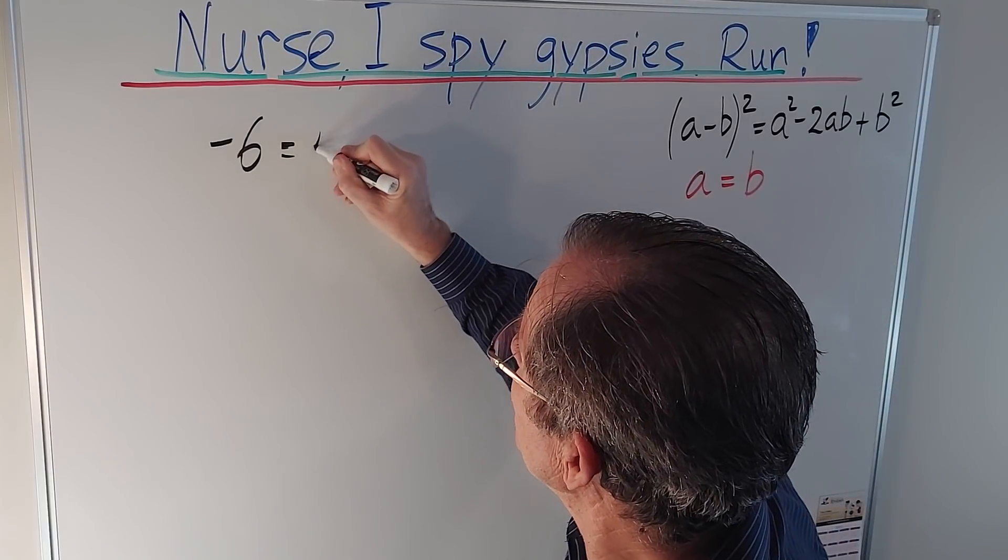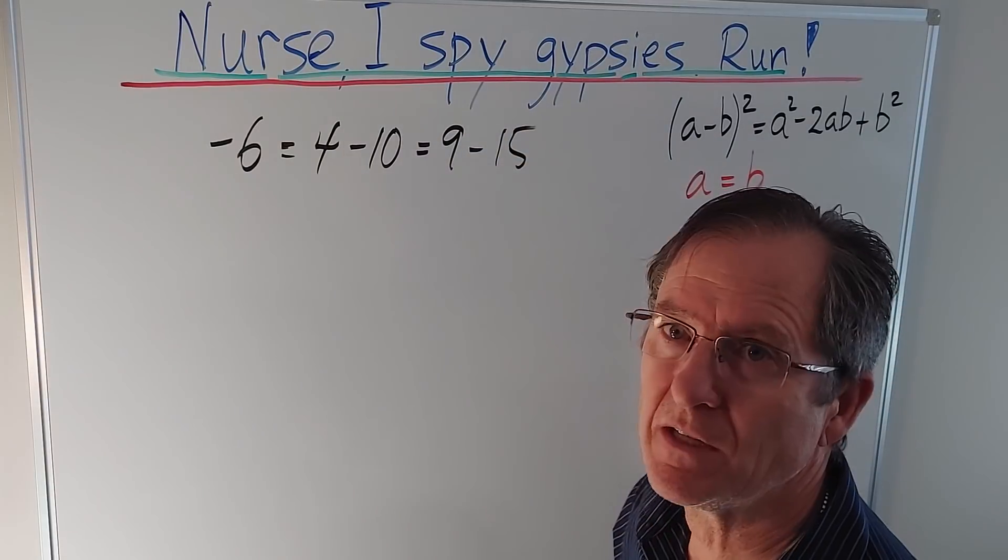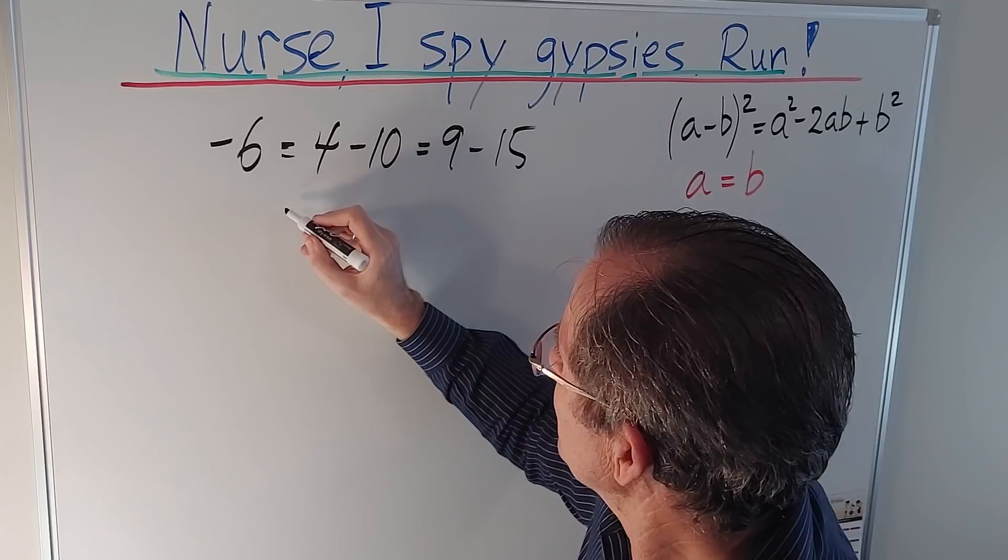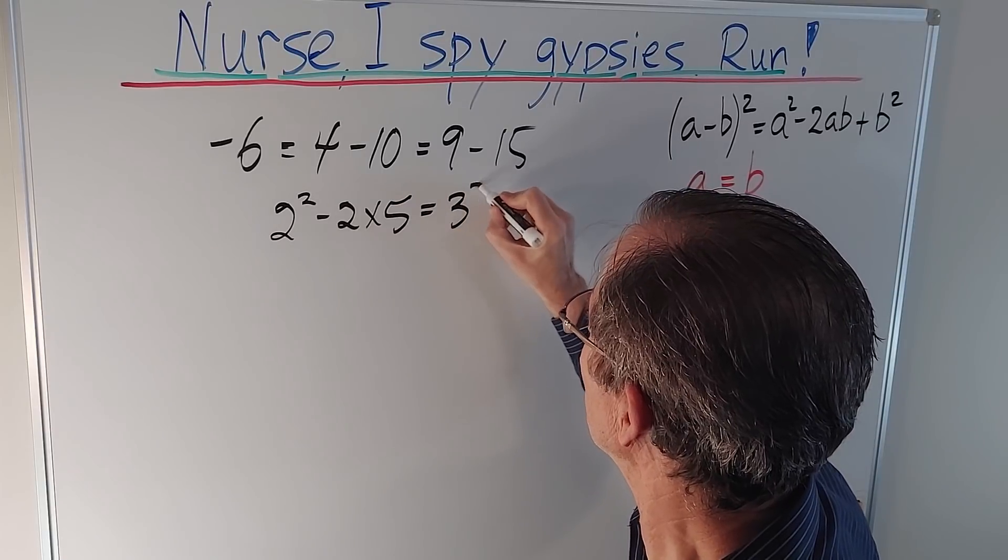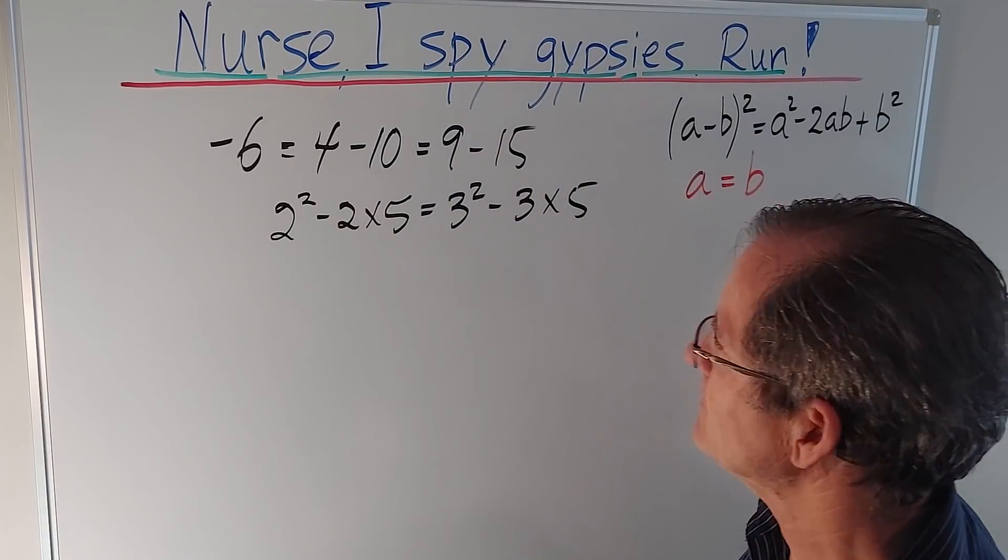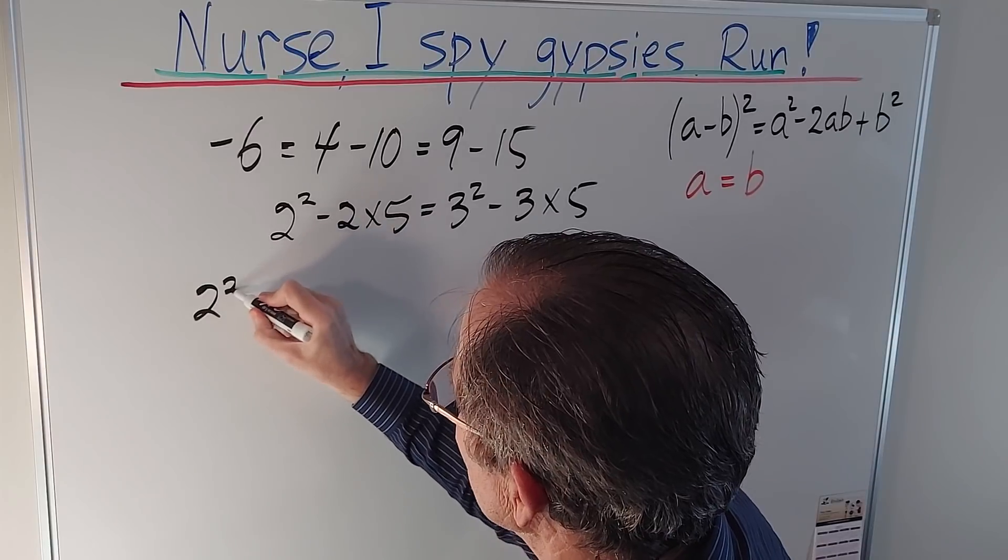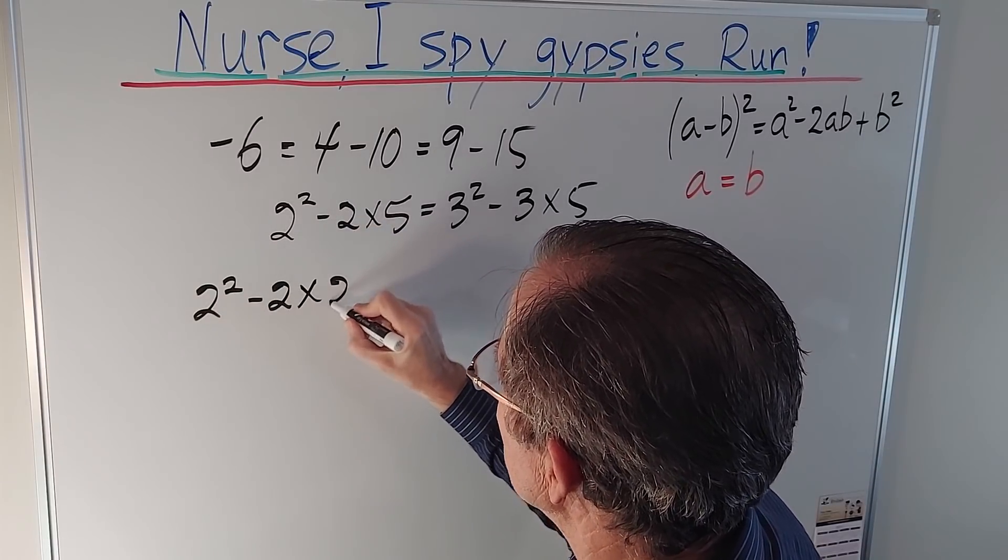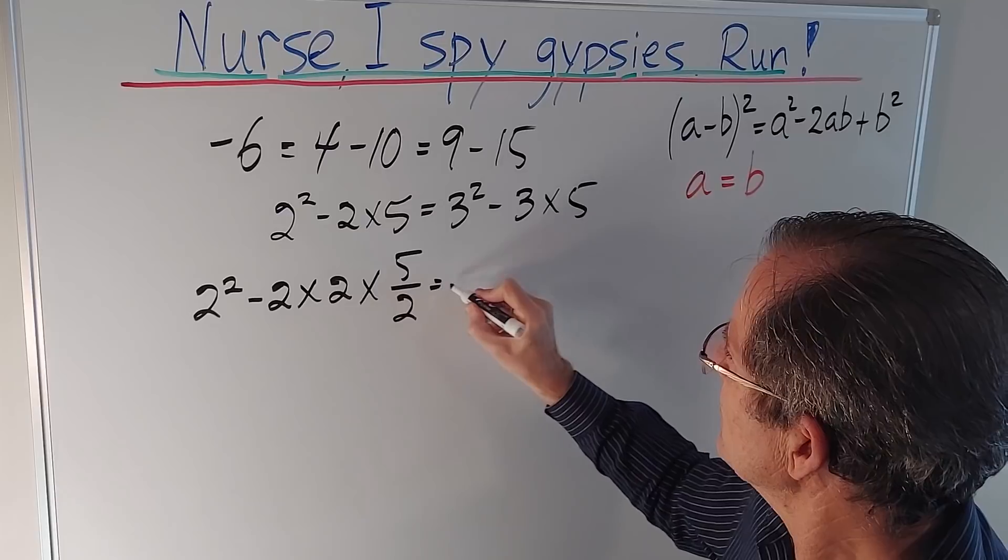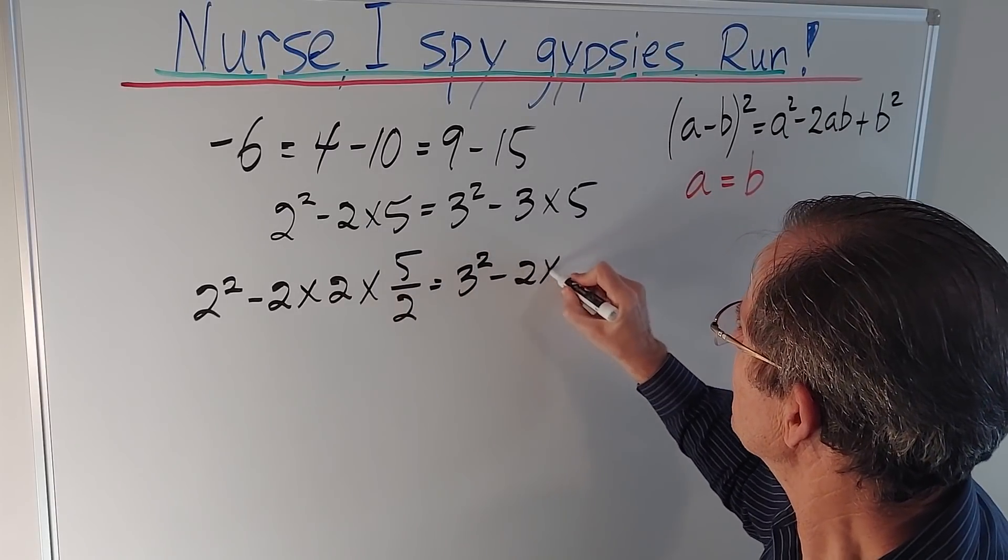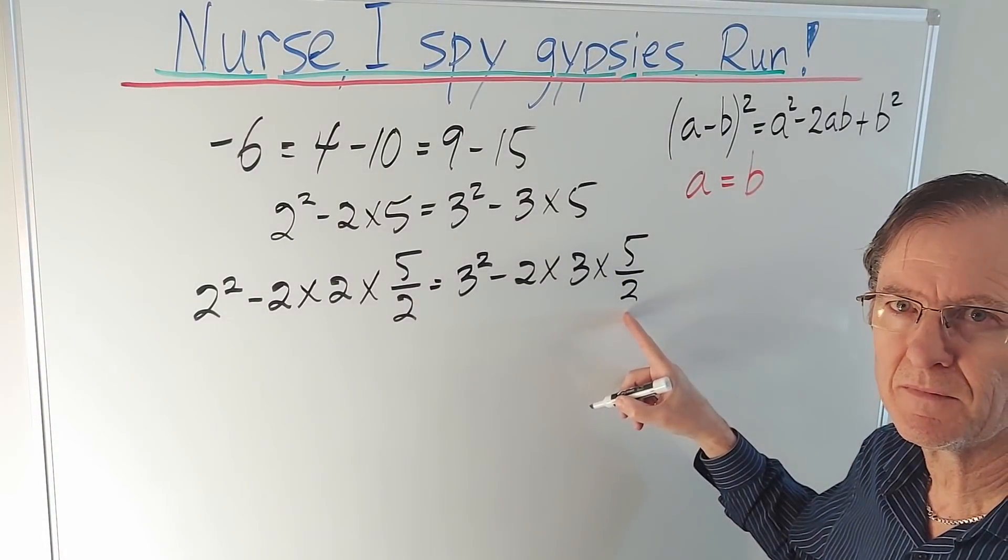Negative six is four minus ten which is equal to nine minus fifteen. I can rewrite that as 2 squared minus 2 times 5 equals 3 squared minus 3 times 5. And then I can do the following little trick. 2 squared minus 2 times 2 times 5 over 2 where those two twos cancel. So far so good.